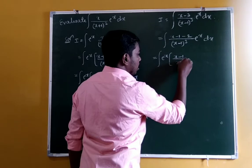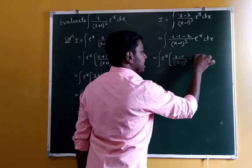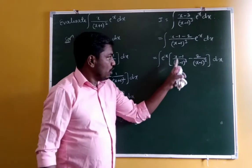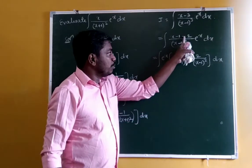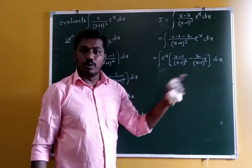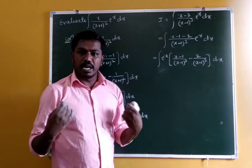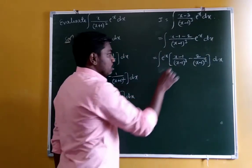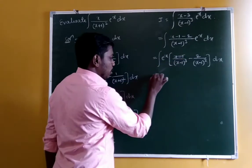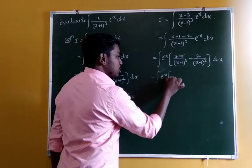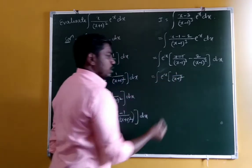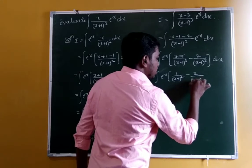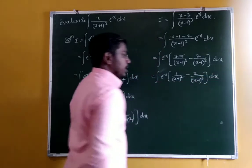Separate as: (x−1)/(x−1)³ minus 2/(x−1)³. Since (x−1) appears 1 time in numerator and 3 times in denominator, 1 cancels, leaving 1/(x−1)². So integration of eˣ into [1/(x−1)² minus 2/(x−1)³] into dx.